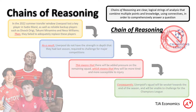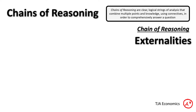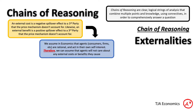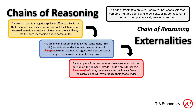That's a chain of reasoning about football, but I could easily give you a chain of reasoning about externalities. For example, an external cost is a negative spillover effect to a third party that the price mechanism doesn't account for. Likewise, an external benefit is a positive spillover effect to a third party that the price mechanism doesn't account for. We assume in economics that agents are rational and act in their own self-interest. Therefore, we can assume that agents will not care about any external costs or benefits that they cause.